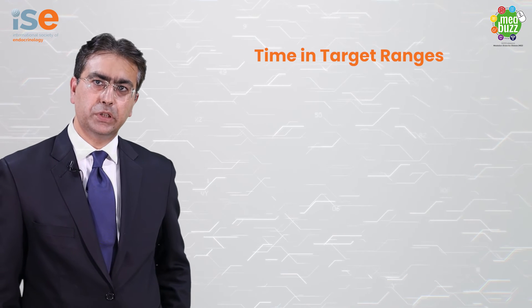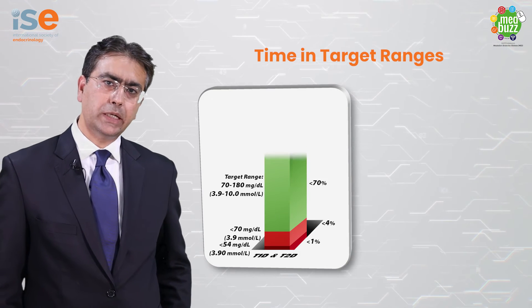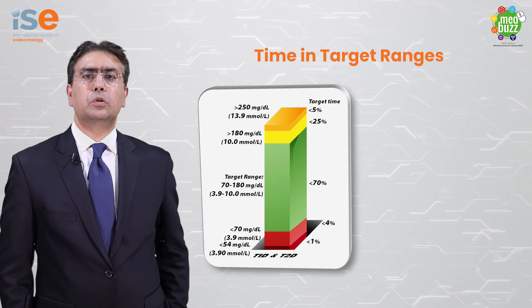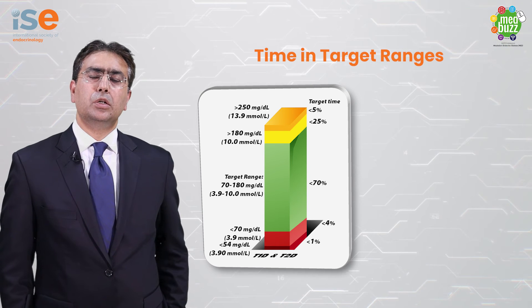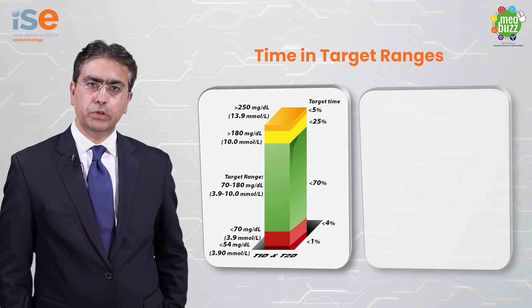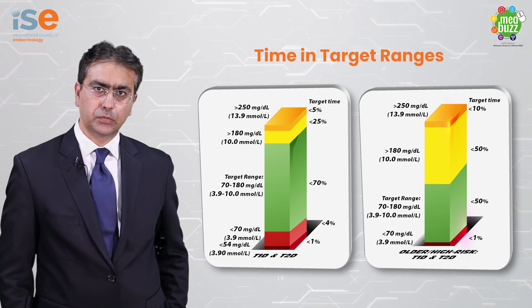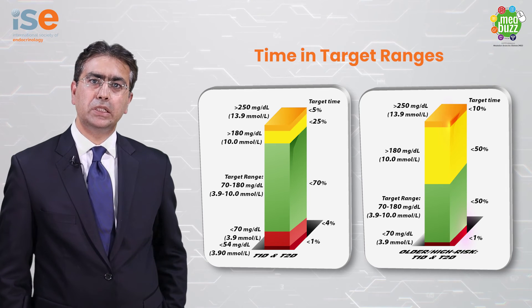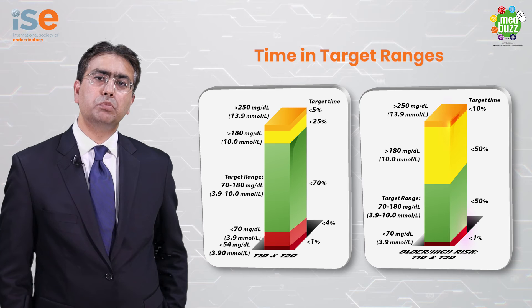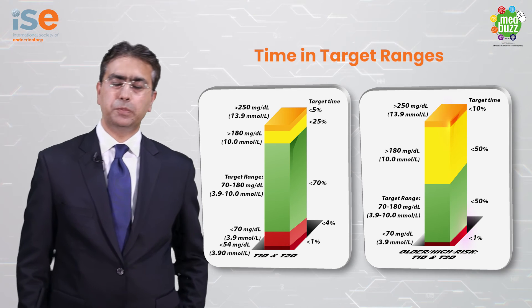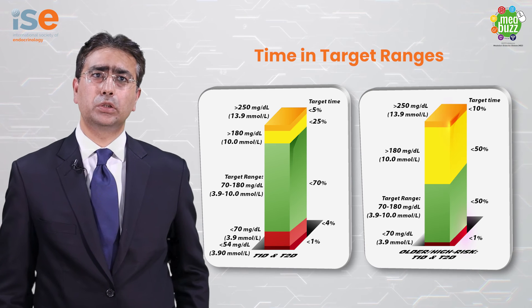So what are the guidelines regarding time in target ranges? For most people with type 1 and type 2 diabetes mellitus, their time in target range should remain more than 70%. Not more than 5% should be below target range, and not more than 1% should be in level 2 hypoglycemia. Not more than 25% should remain in above target range, and not more than 5% should remain in level 2 hyperglycemia. These targets are relaxed in older people and in people with type 1 and type 2 diabetes who have complications.